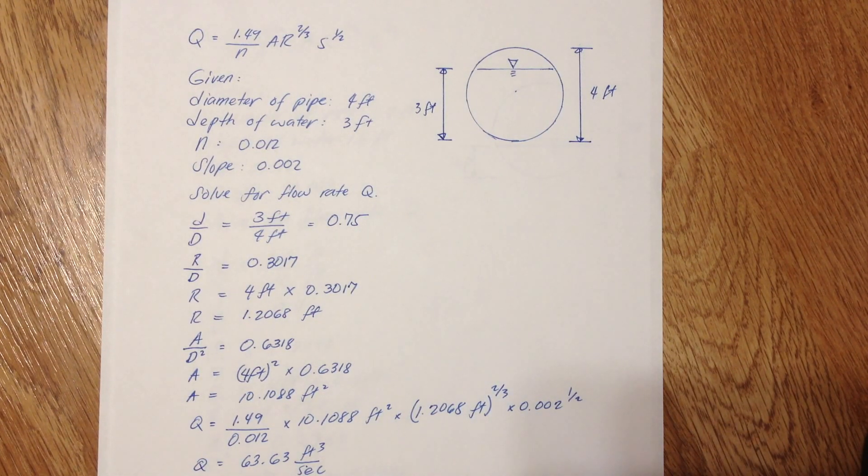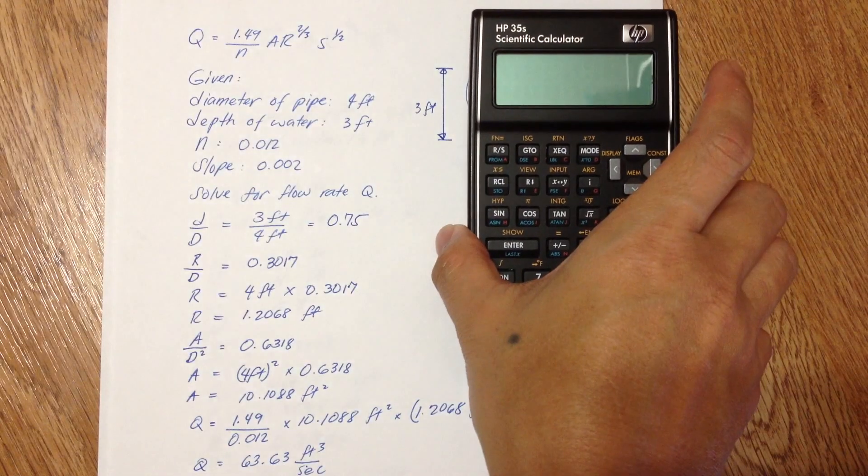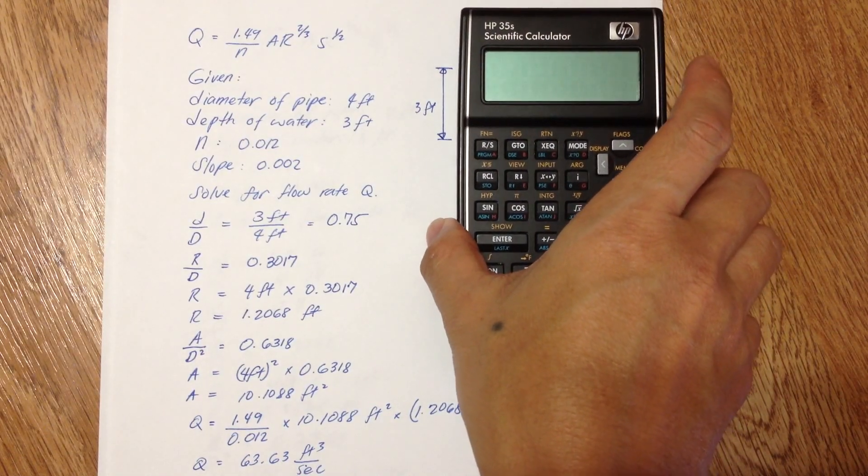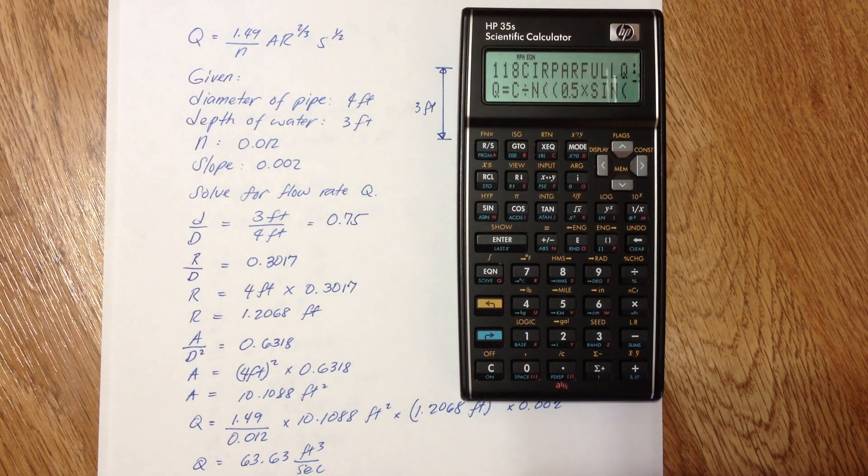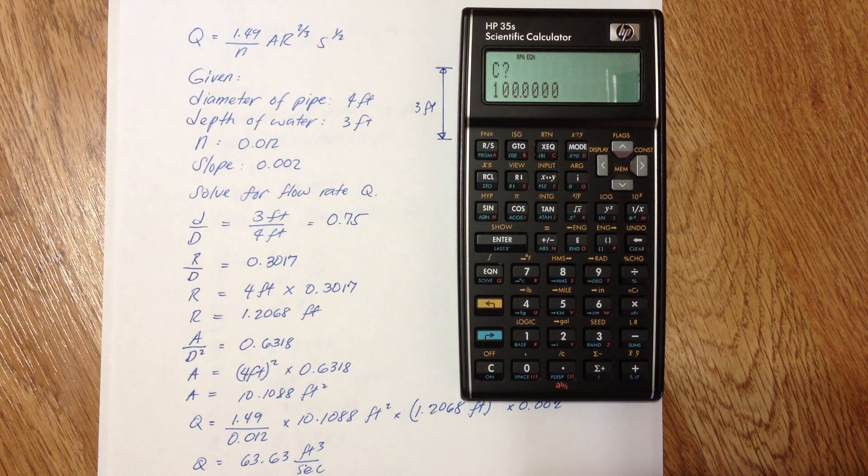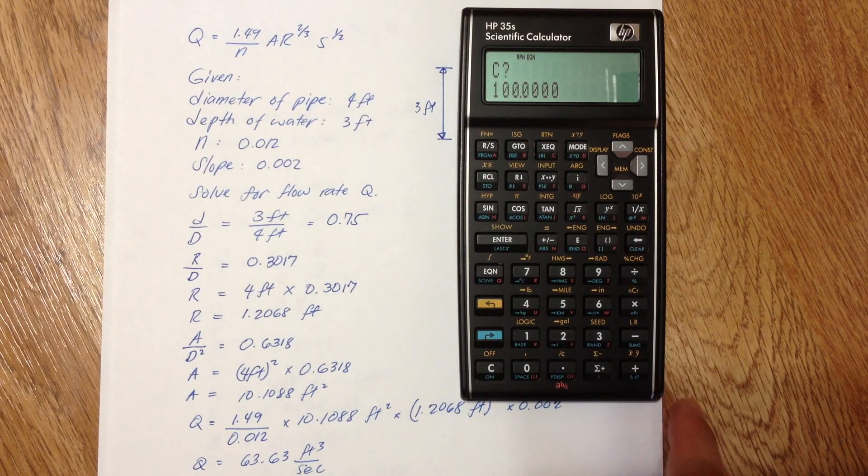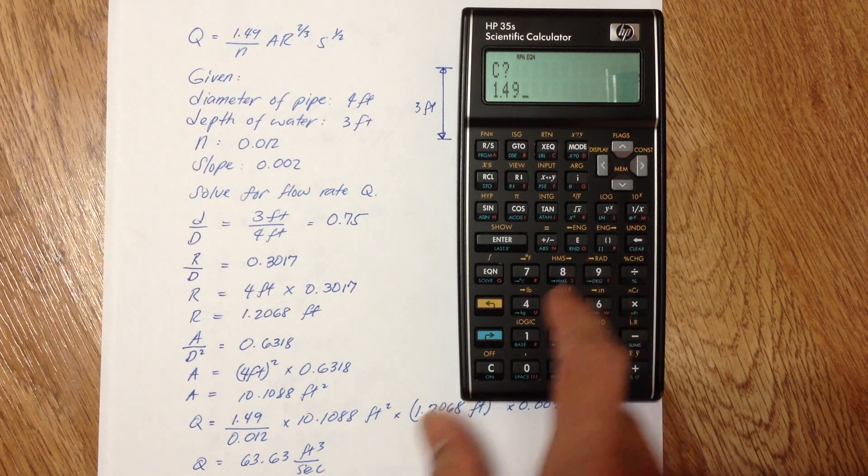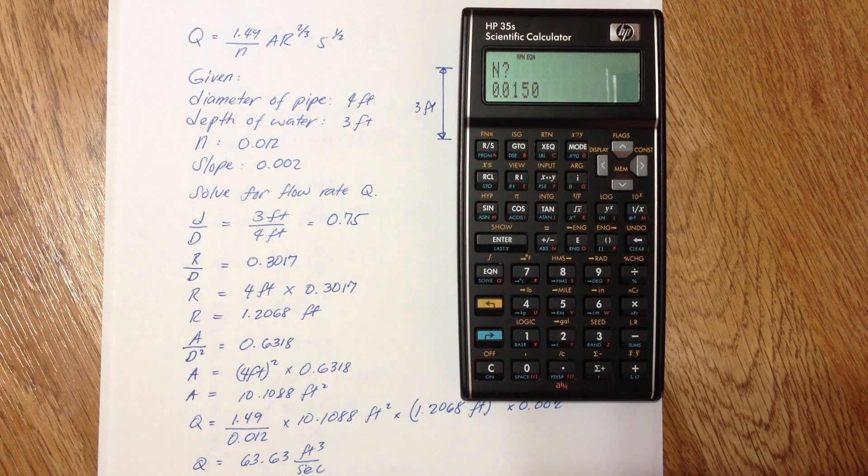Alright, to use my equation from my book Useful Equations for HP 35s or HP 33s Calculator for the Civil PE Exam, it's equation number 118, which is circular partially full solving for Q. Just press enter and all we have to do is plug in those values. C is the constant which is 1.49 for English units.